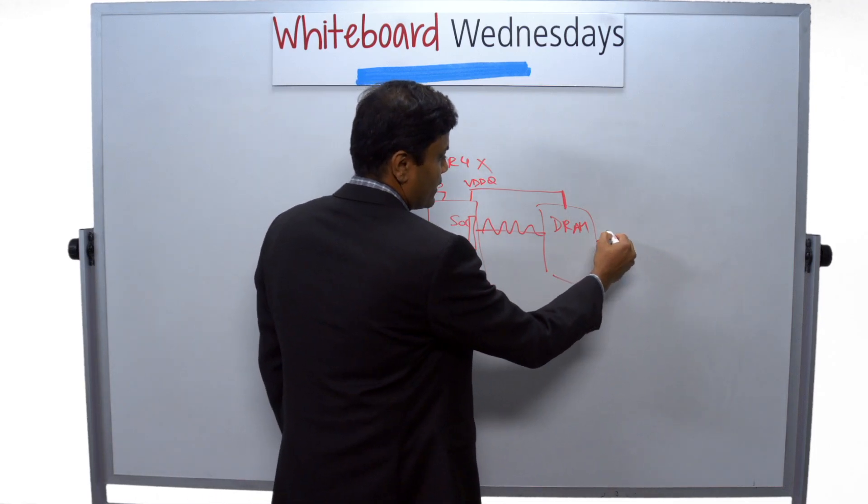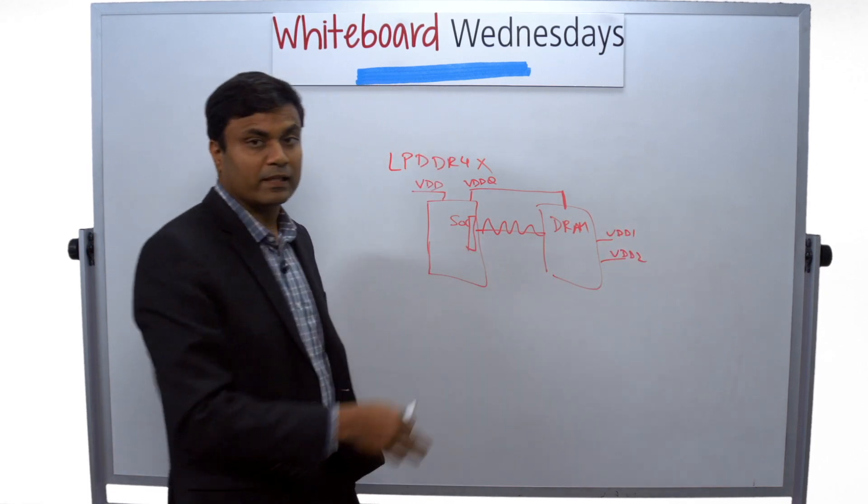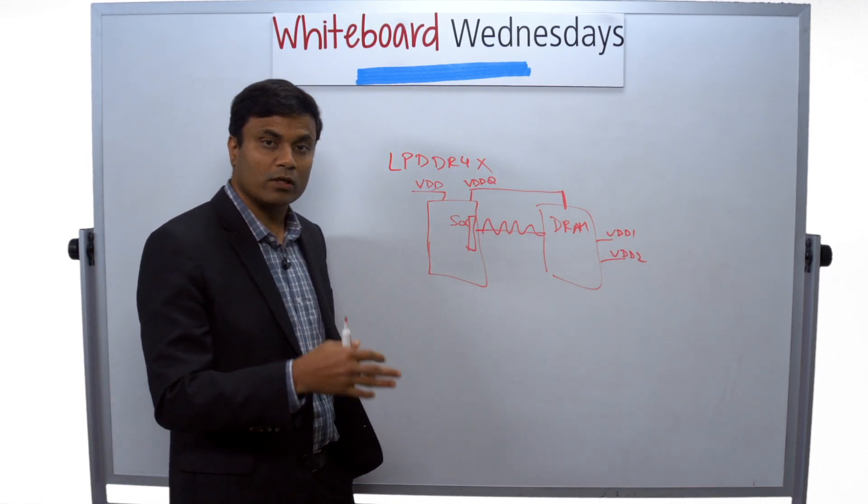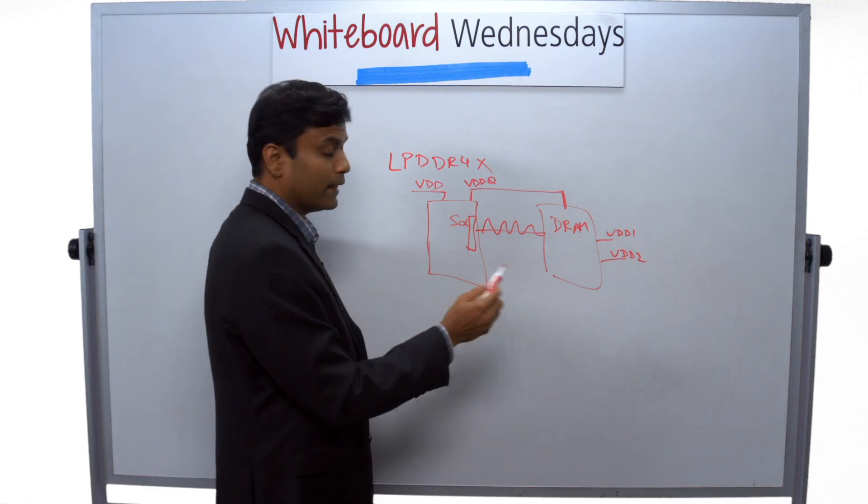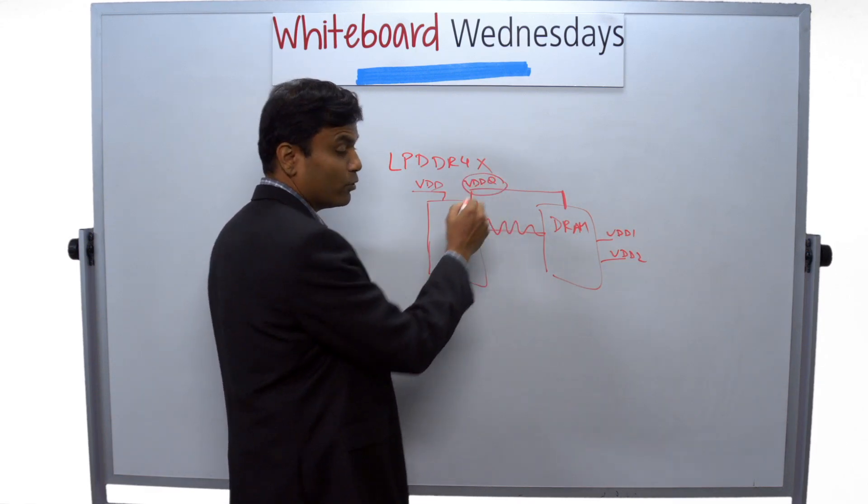And then DRAM itself has VDD1 and VDD2, the other supplies. VDD1 and VDD2 are used by the internals of the DRAM for the row and column circuits, and the area of focus for LPDDR4X is optimizing this voltage.